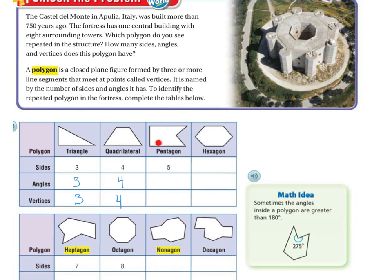Now let's look at the pentagon. Sides: one, two, three, four, five — five sides. Let's look at the angles: one, two, three, four, five — five angles. Let's look at the vertices: one, two, three, four, five — five vertices.